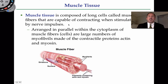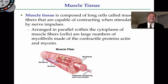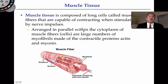The muscles associated with voluntary control — under our conscious control — are considered to be skeletal muscle. In this podcast we're going to look at the three types of muscle tissue.